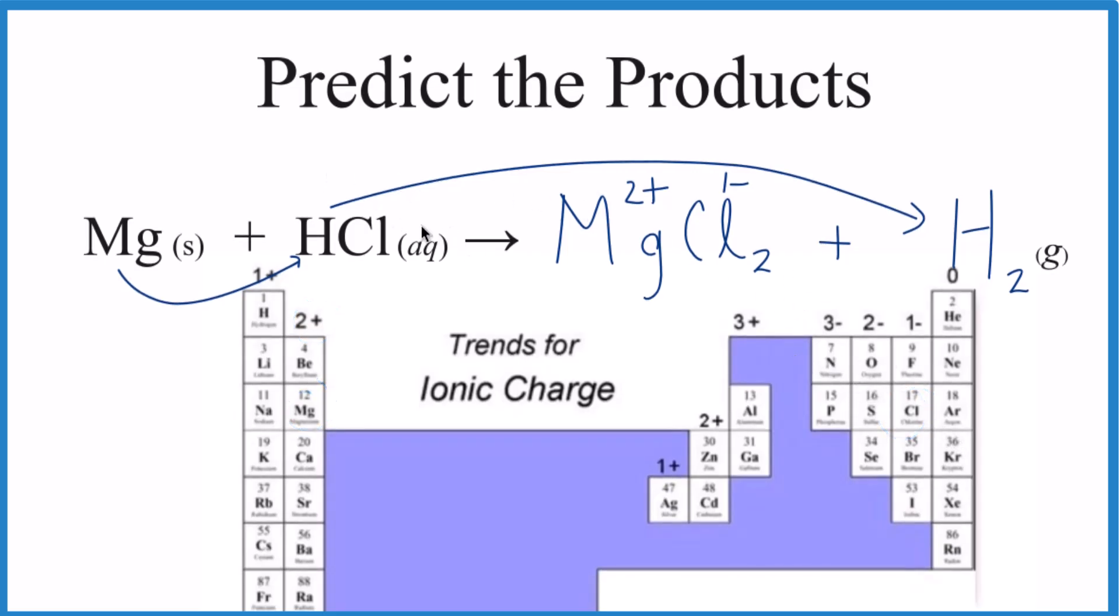So that means that the products of the reaction, Mg plus HCl, that gives us MgCl2 plus H2.